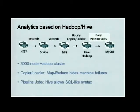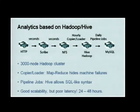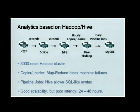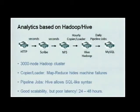However, there's a key problem about this pipeline: the data delay is actually very long. The latency is usually 24 to 48 hours, because when the data gets processed by the daily pipeline jobs, it's already 24 hours past when the data was generated. So that's a key problem that we want to solve.